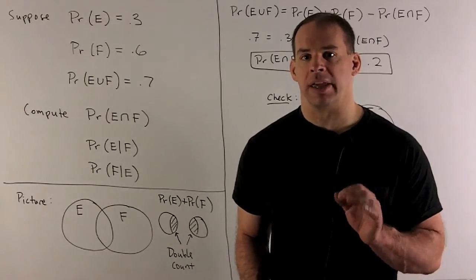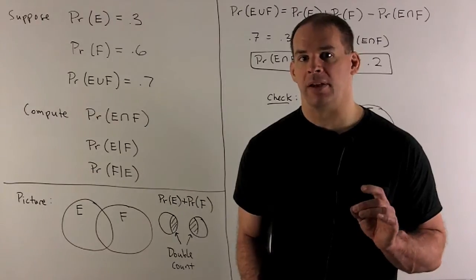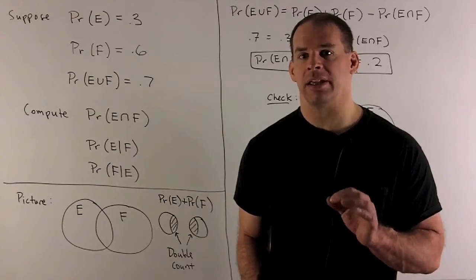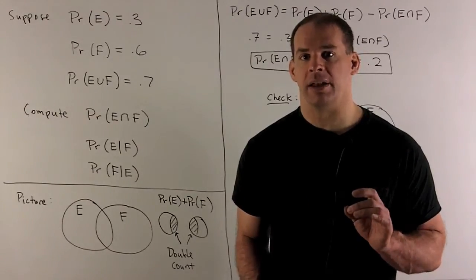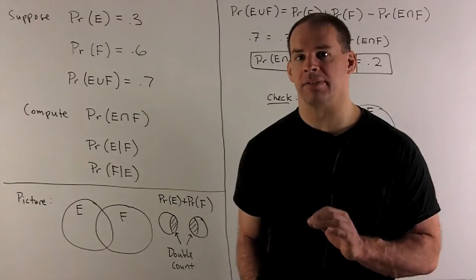First, the probability of the intersection, then the conditional probability of E given that F occurs, then the conditional probability of F given that E occurs.